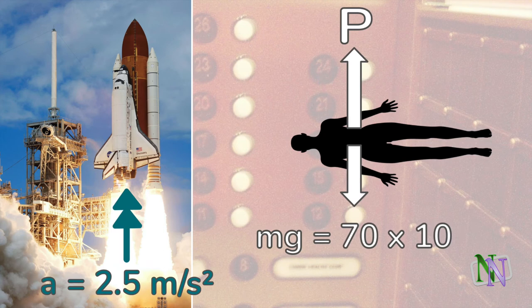She experiences her downward weight, which, using the formula W equals MG, on Earth is approximately 700 newtons. The upwards force P, due to the push of her seat, is what we need to find.